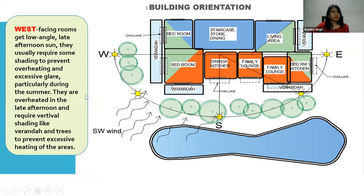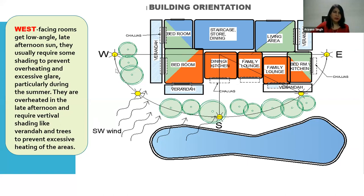West-facing rooms get low-angle sun in the late afternoon. They usually require some shading to prevent overheating and excessive glare, particularly during summer when they are overheated in the late afternoon. Provide vertical shading like verandas and trees to prevent excessive heating of the area.